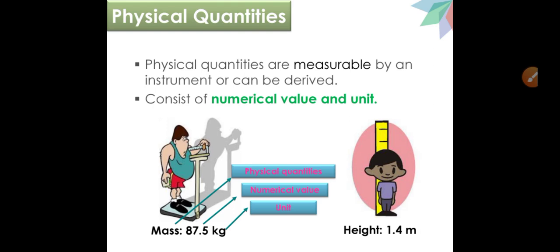Let me give you one example. Like over here you can see a boy whose height is 1.4 meter. So height is a physical quantity, 1.4 is the numerical value, and meter is the unit.